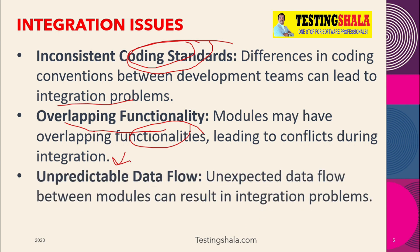The next type of issue is unpredictable data flow. Sometimes we are not able to anticipate particular things whenever we are trying to send data from one module to another. We may see unknown or unexpected things, and if we see unexpected data flow during testing between modules, we may get into data flow issues.